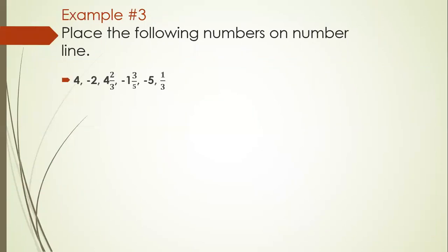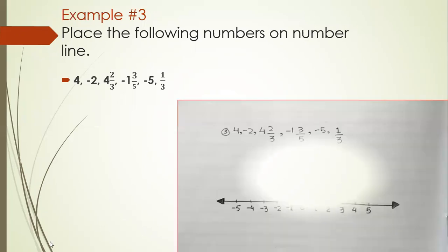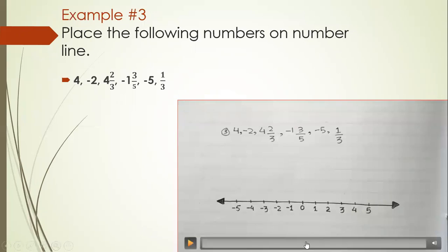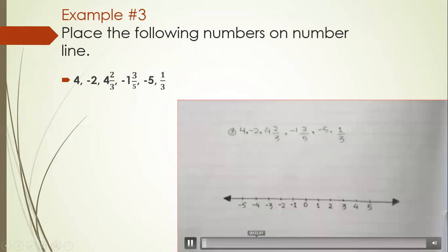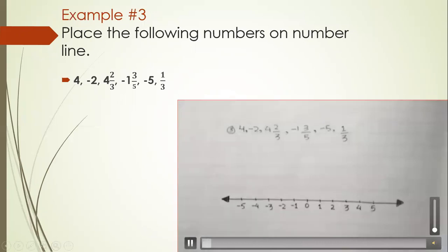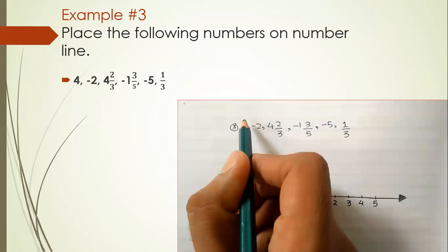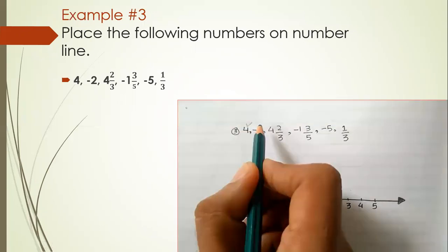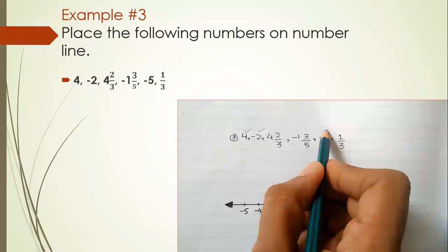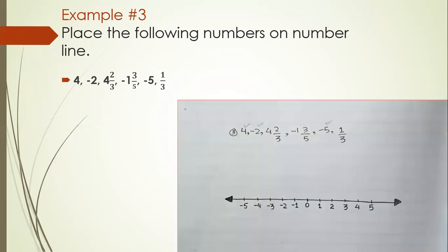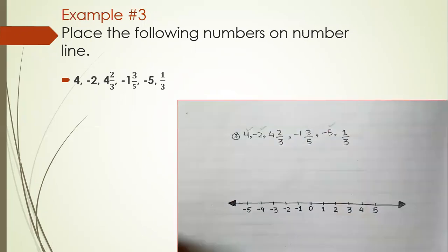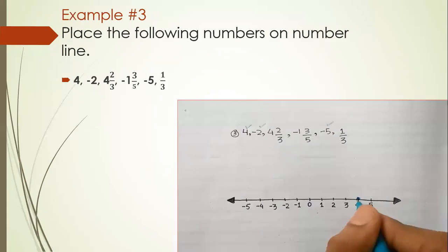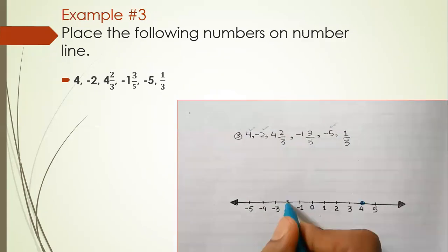Now for example number three. We have three integers: four, minus two, and minus five, along with three fractional forms. First, let's mark the three integers on the number line: four is here, minus two is here, and minus five is here.